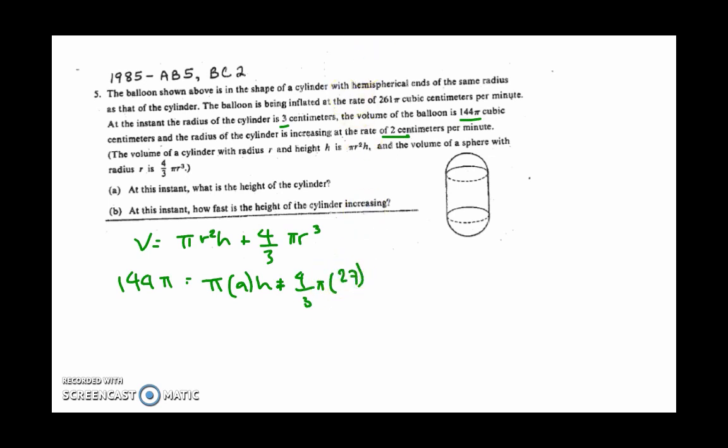So then I simplify this as much as I can. 144 pi equals 9 pi h. 27 over 3 is 9. 9 times 4 is 36 pi.